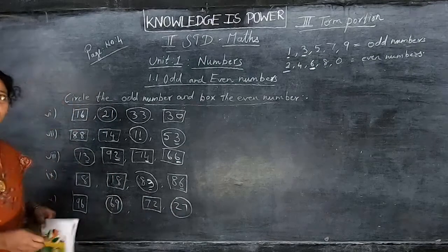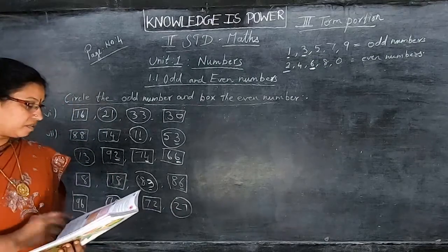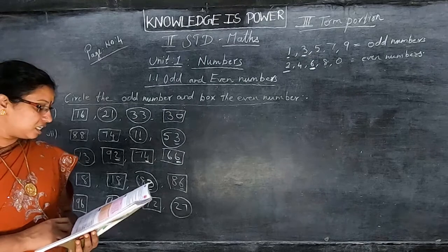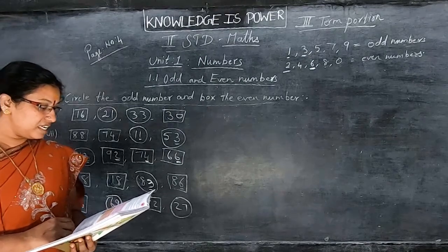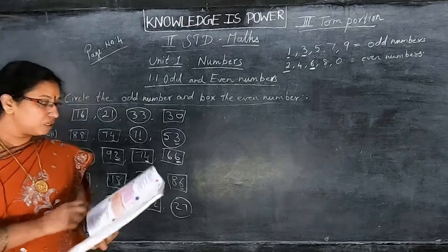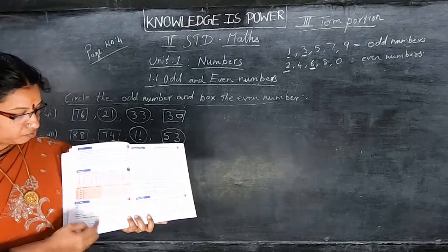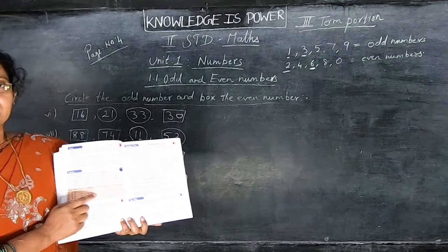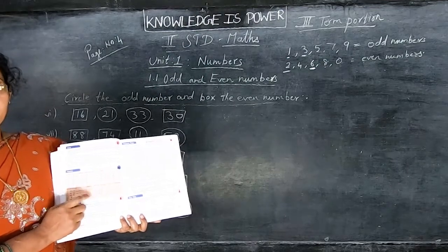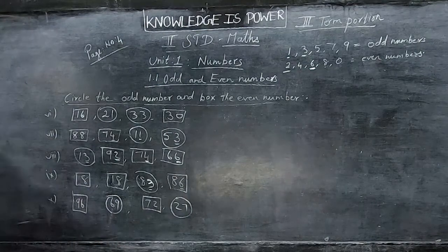You do the rest as homework, children. Verify whether your answers are correct or not. Then you are going to write the next 5 even numbers. Two numbers are given — see here the orange colour box on page number 4. They have given 2 numbers, and you are going to write what comes next as the even numbers.